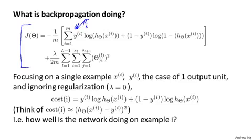But if only one output unit, then this is the cost function. And we do forward propagation and backpropagation on one example at a time. So let's just focus on a single example, xi, yi. And focus on the case of having one output unit. So yi here is just a real number. And let's ignore regularization. So lambda equals zero. And this final term, that regularization term goes away.